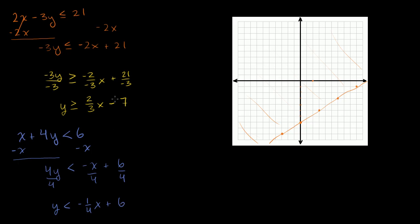The y-intercept is positive 6, and the slope is negative 1/4 — so every time you run 4, you go down 1. Since we're not including the line itself, we draw a dotted line here. The line goes off the graph, and I'll also extend the previous orange line to show where they intersect.